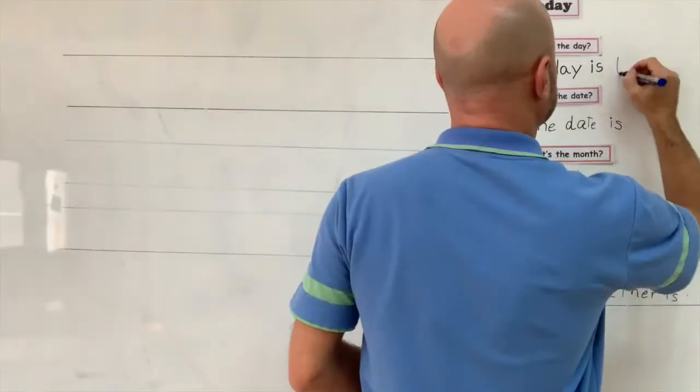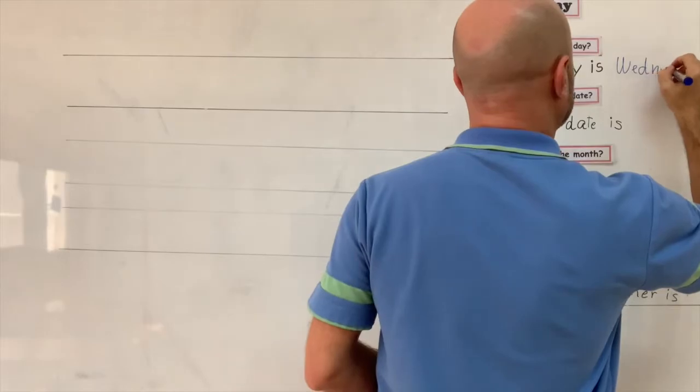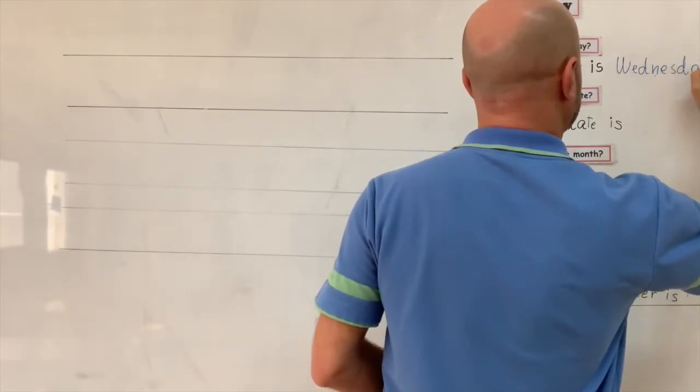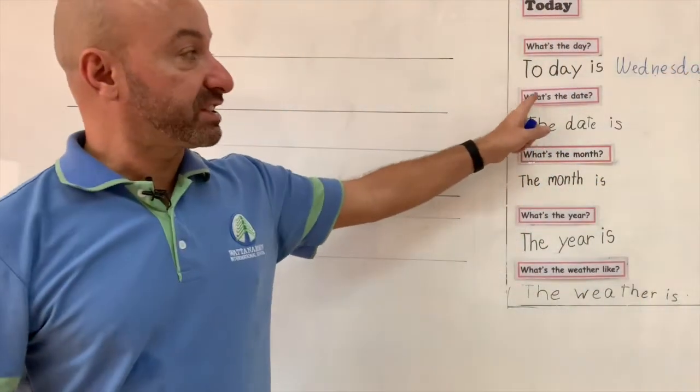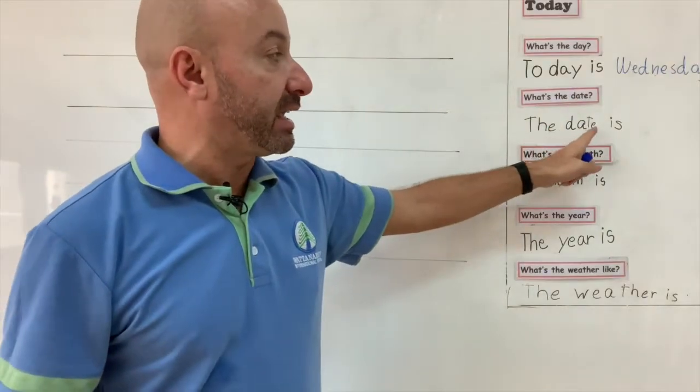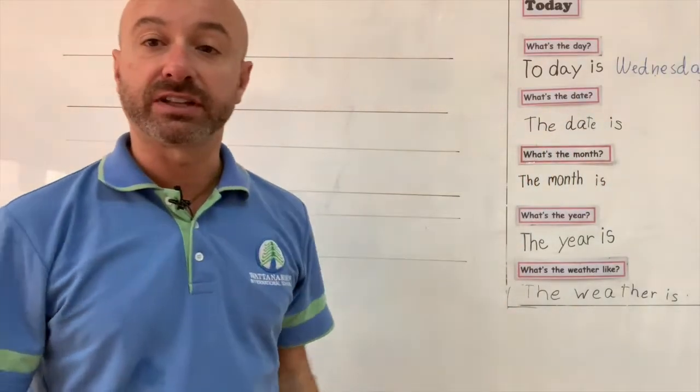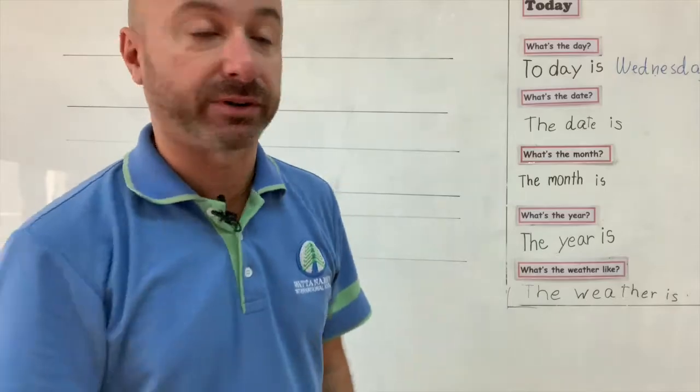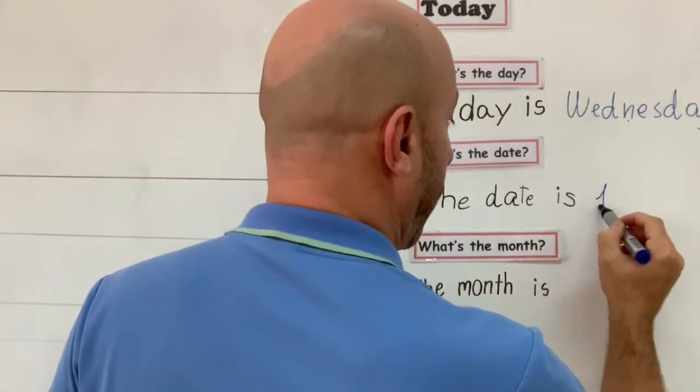What's the date? The date is today is the first of April, so I write one S T. This is an ordinal number - first, second, third, fourth, and so on.